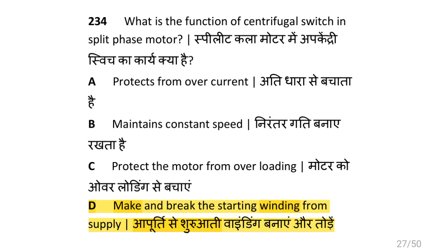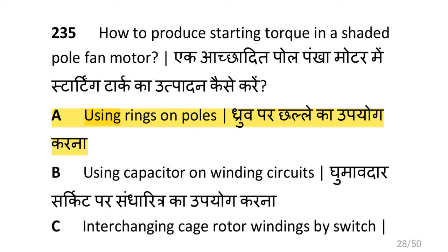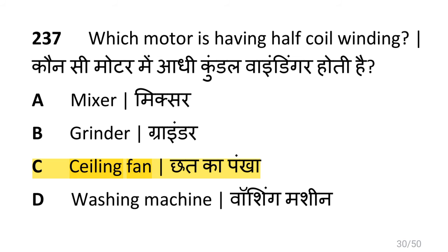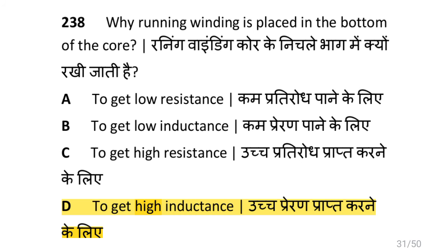What is the function of centrifugal switch in split phase motor? That is to make and break the starting winding from supply. How is starting torque produced in a shaded pole fan motor? That is by using rings on the pole. What is the reason to use a permanent capacitor in fan motor circuit? That is splitting of phase for torque. Which motor has half coil winding? That is ceiling fan. Why is running winding placed at the bottom of the core? That is to get high inductance.